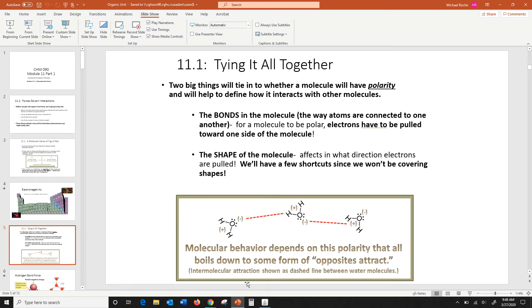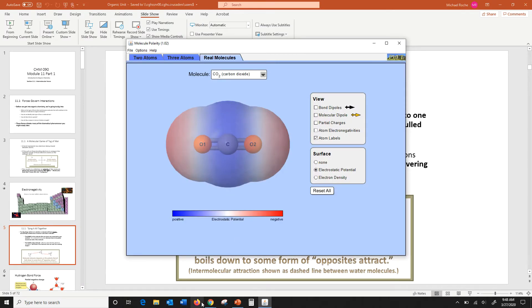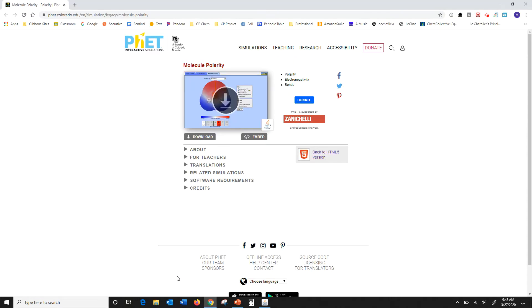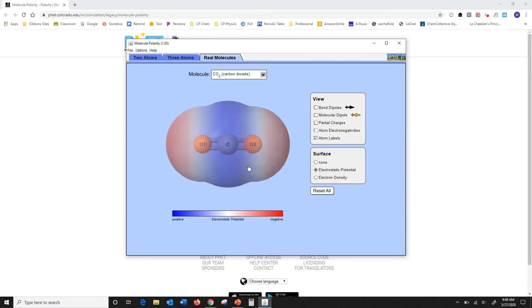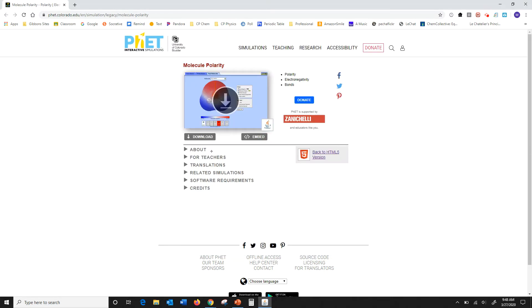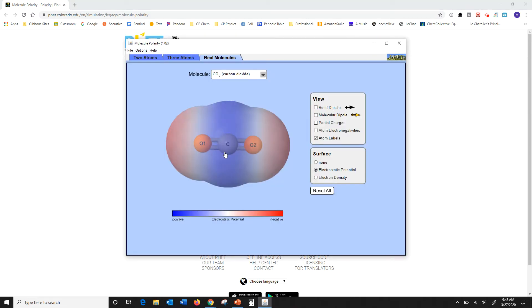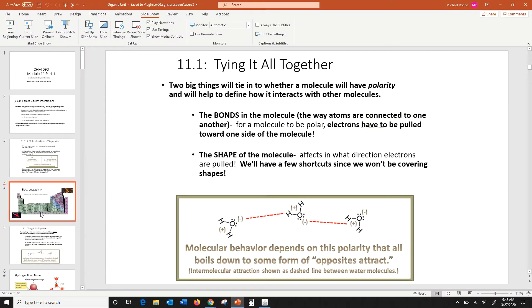So I went to PhET and looked up polarity, and I found this. And so here is an example. So this is a carbon dioxide molecule, carbon double bonded to two oxygens. So this is a carbon double bonded to two oxygens.